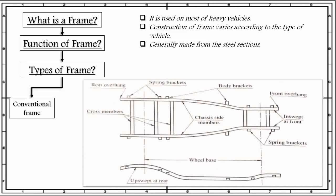This type of frame has two long members, this one and this one, and five to six cross members. These cross members are joined together with the help of rivets or bolts. The cross members are used to increase the strength of the frame.